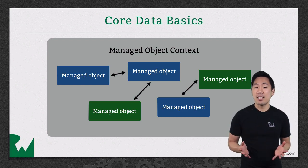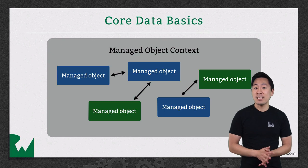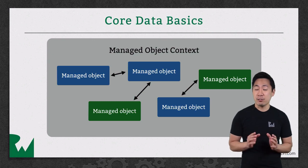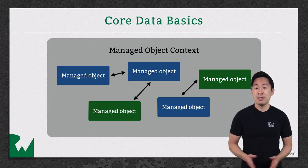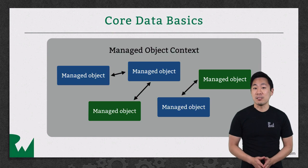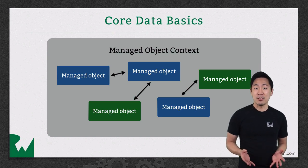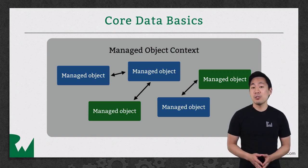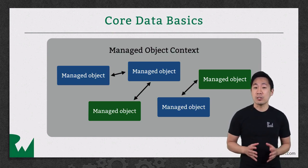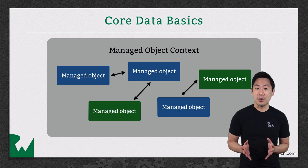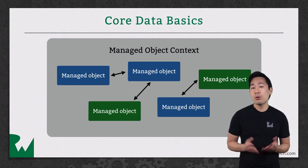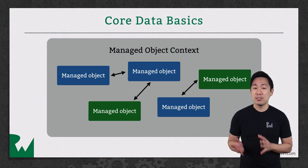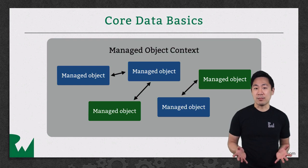You also saw how to use lightweight migrations, which can automatically handle minor changes to your data model. In the intermediate Core Data series you'll learn about mapping models, which you can use to handle more substantial changes to the data model, or if you need some custom logic to move data around during the migration.